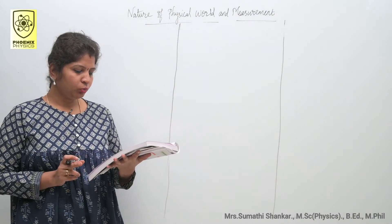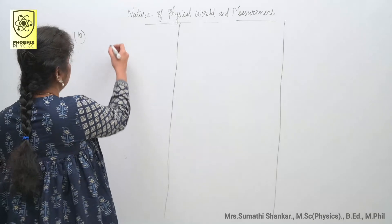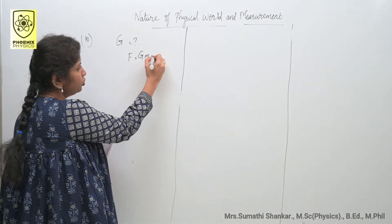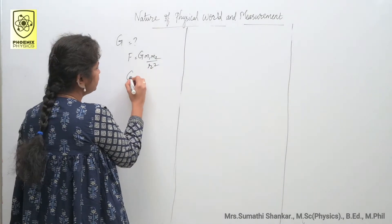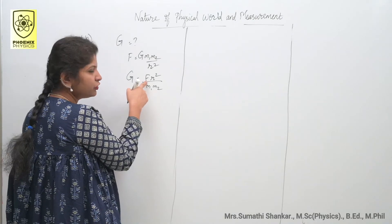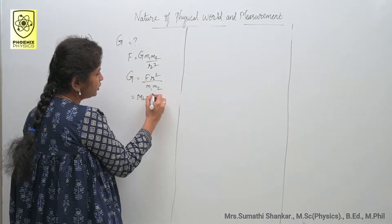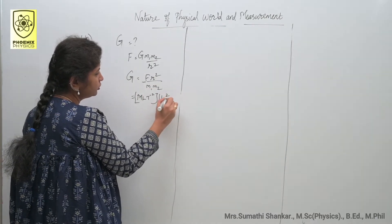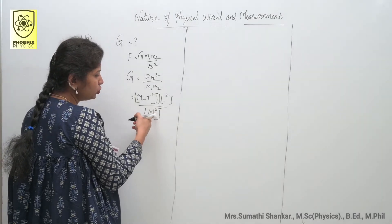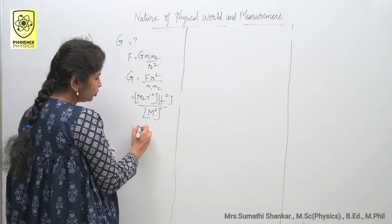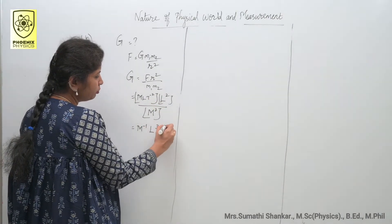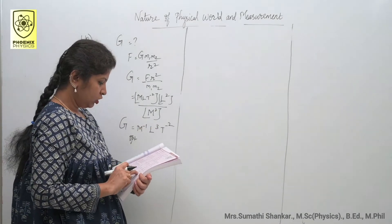Question number 10: the dimensional formula for gravitational constant G. From Newton's law, F equals G M₁M₂ by r², so G equals F r² divided by M₁M₂. Substituting: G equals M L T⁻² times L² divided by M², giving M L³ T⁻² times M⁻², which simplifies to M⁻¹ L³ T⁻². Option B is correct.